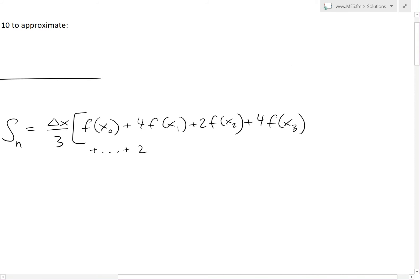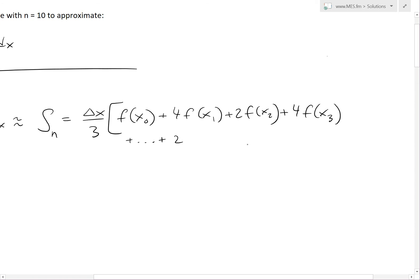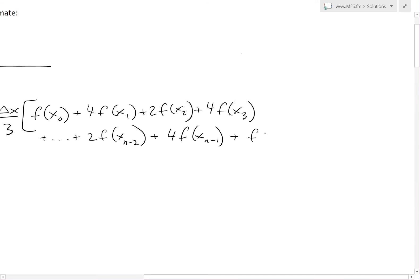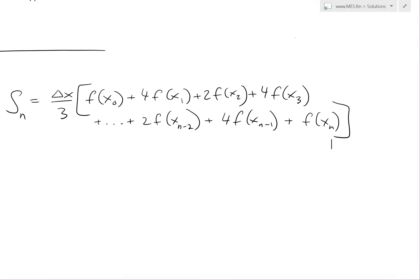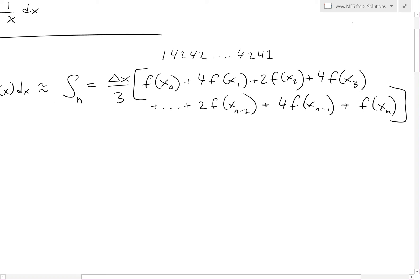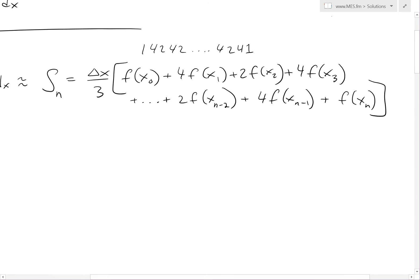Then it goes 4 f of x_1, then plus 2 f of x_2, and this keeps going on in this exact same pattern. Four f of x_3 plus, keeps going 2, 4, 2, 4, until we get 2 f of x_(n-2), plus 4 f of x_(n-1), and then finally plus f of x_n. The pattern is 1, 4, 2, 4, 2, keeps going on, 4, 2, then 4, and the last one is 1. It starts with 1, 4, and ends with 4, 1.